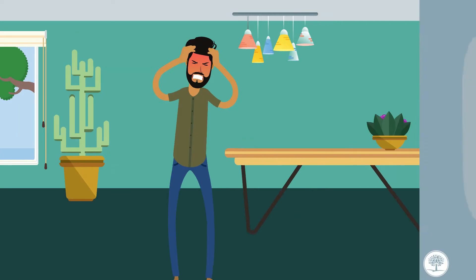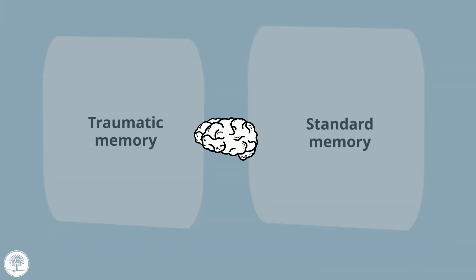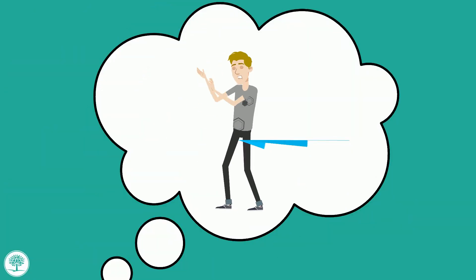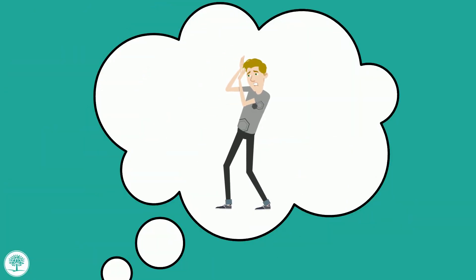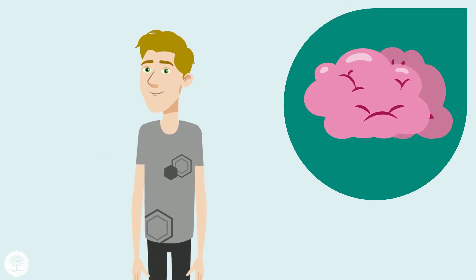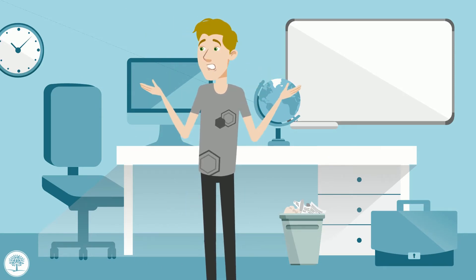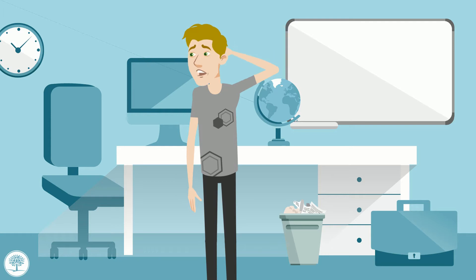It's important to know that traumatic memory is stored differently than standard memories. Standard memories can fade over time — details get a little fuzzy — whereas traumatic memory often remains very sharp and clear over time. This is in part because of its association with the amygdala and less with the hippocampus, though there are many different factors involved. We also have difficulties concentrating or making decisions.